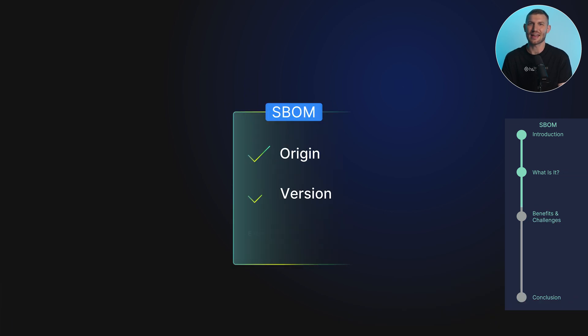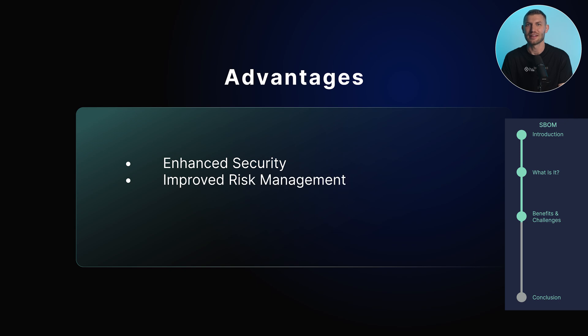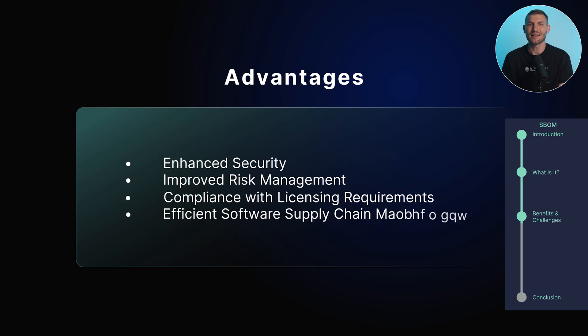First and foremost, an SBOM enhances transparency and improves security in software development and supply chain management. By documenting the origin, version, and licensing information of each component, developers, vendors, and users can have a clear understanding of the software's composition and potential vulnerabilities. An SBOM provides several advantages, including enhanced security, improved risk management, compliance with licensing requirements, and efficient software supply chain management.